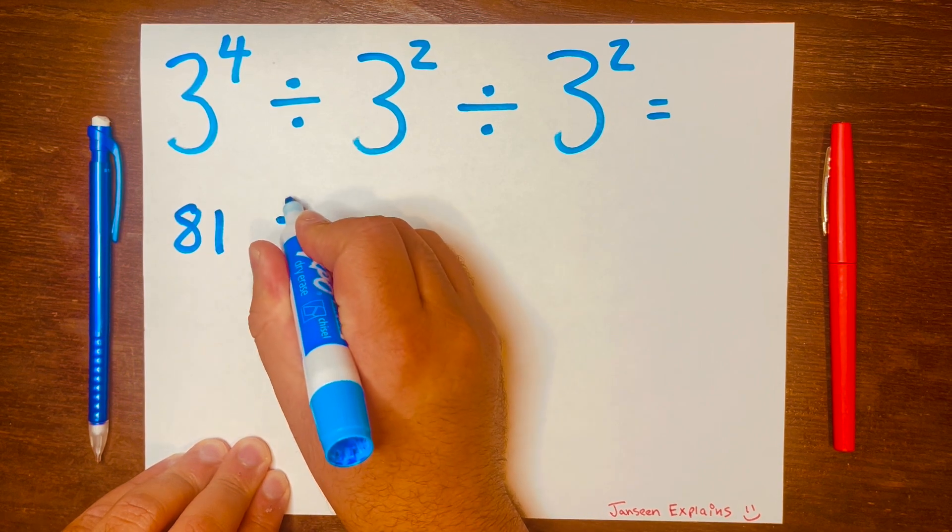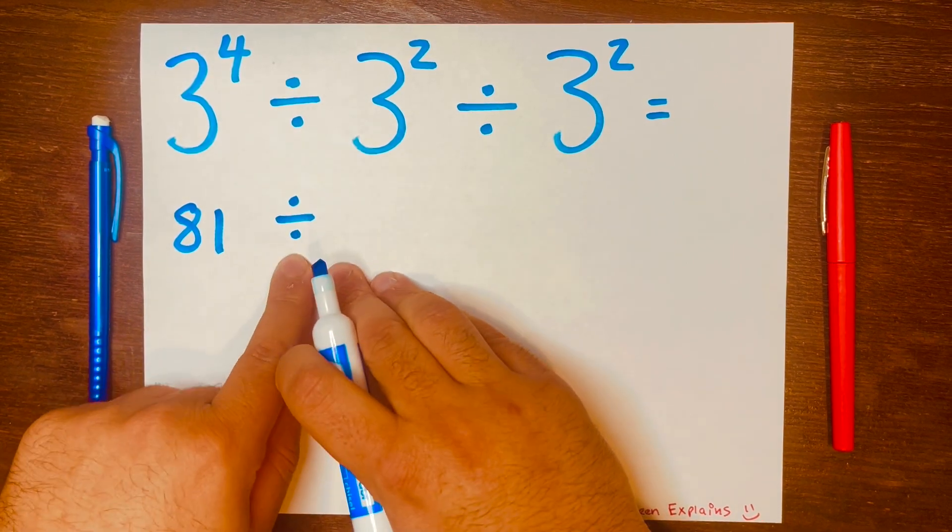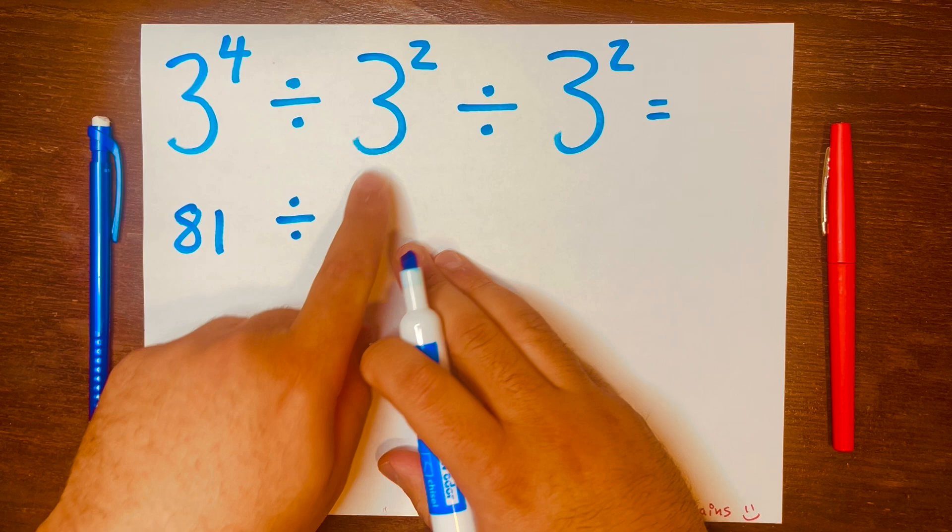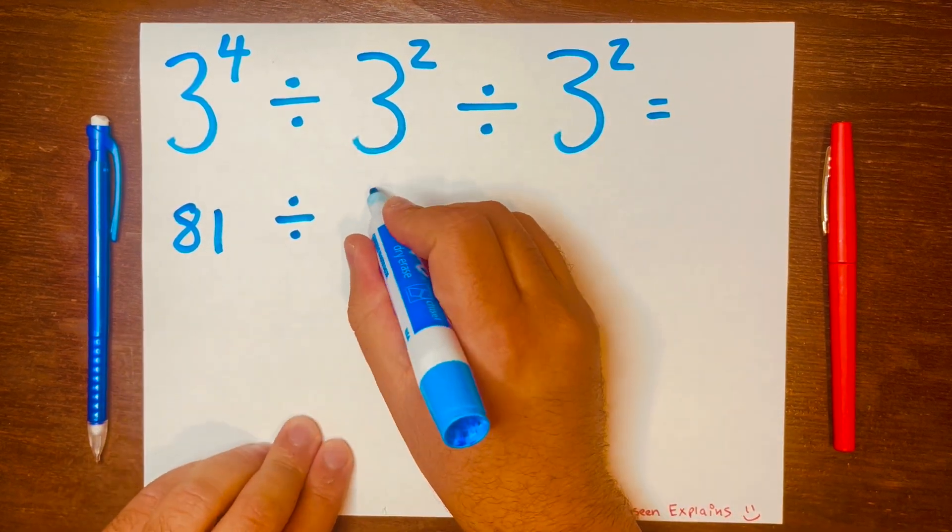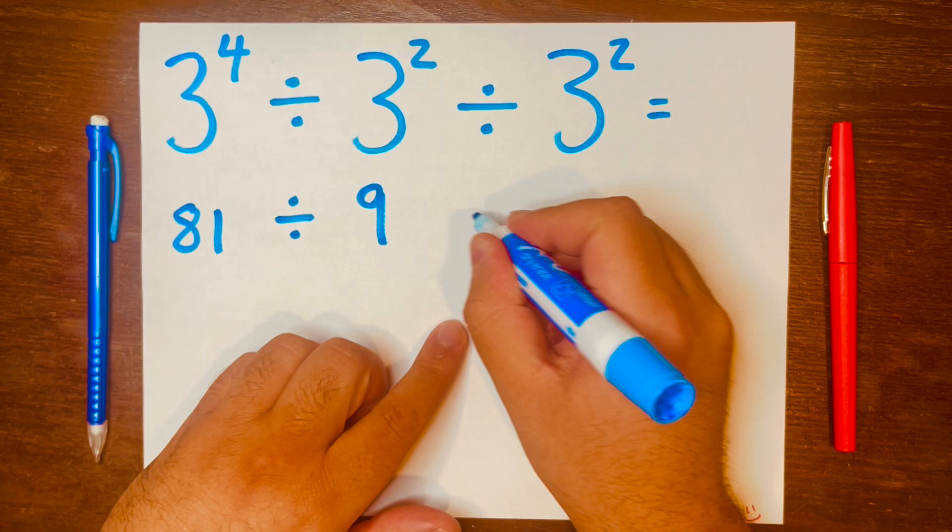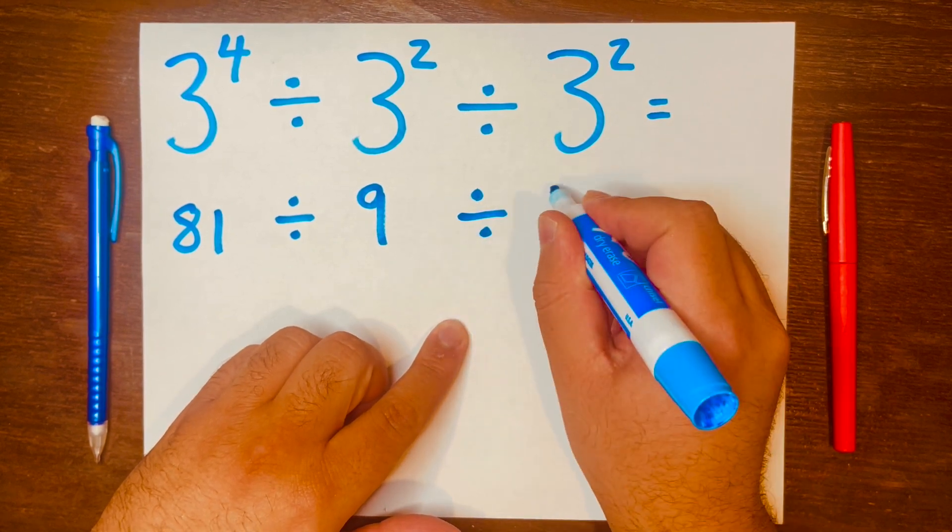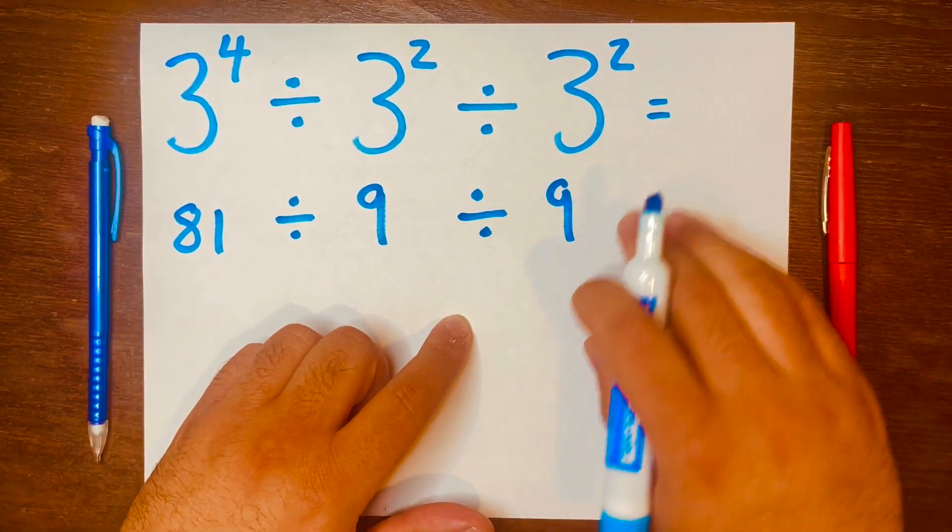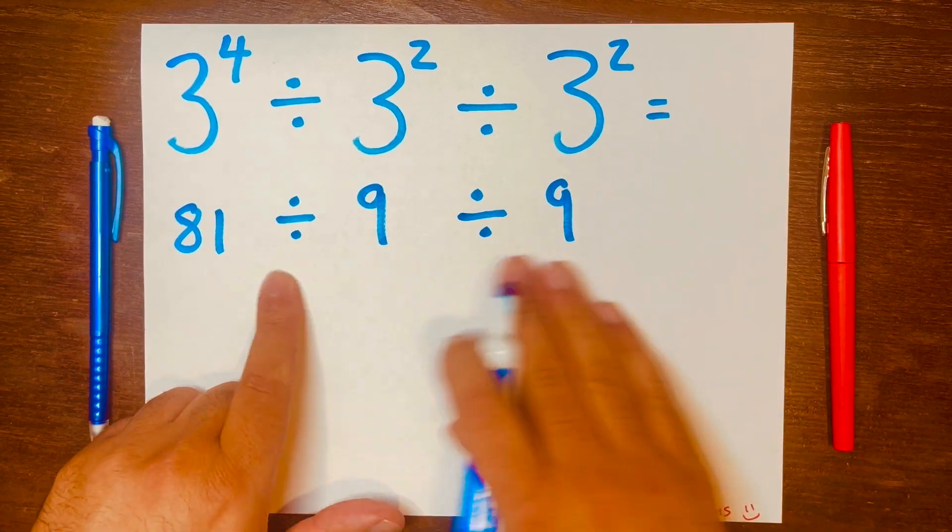Next, three times three is nine, and the same thing here, divided by nine, because three times three is nine. Now we have this problem: 81 divided by nine divided by nine.